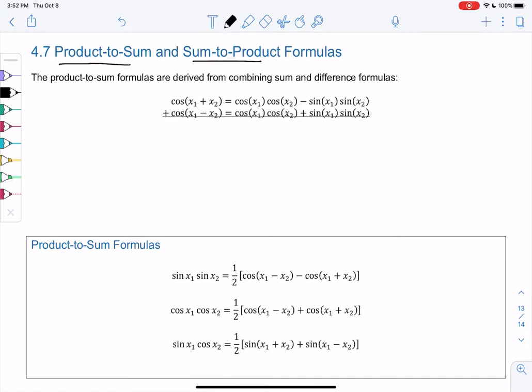I'm going to take those sum and difference formulas from last section and add them together. So if you look back last section, these formulas should look similar. I'm going to add the left sides together. This is allowed because the two equations are equal. On the right side we have two of the same thing, those are weird like terms. 2 cosine x₁ cosine x₂, and then the sines cancel out.